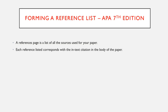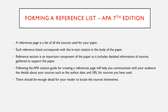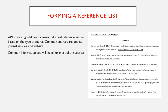A reference page is a list of all the sources used for your paper. Each reference listed corresponds with the in-text citation in the body of the paper. The reference section is an important component of the paper as it includes detailed information of sources gathered to support your paper. Following the APA citation guide for creating a reference page will help you communicate with your audience details about your sources such as the author, date, and URL. There should be enough detail for your reader to locate the sources themselves.